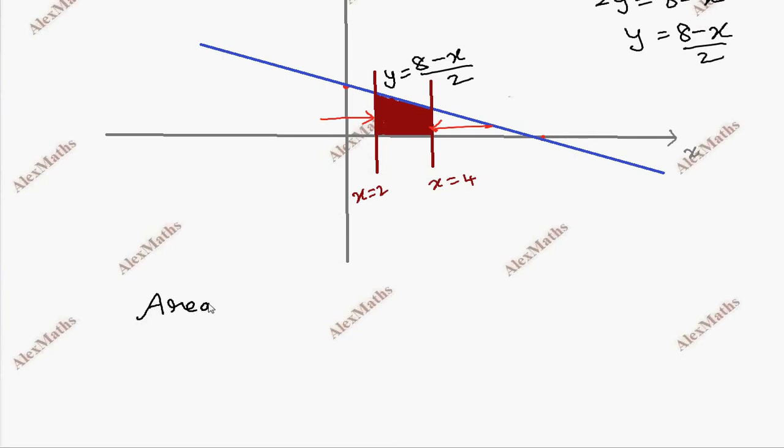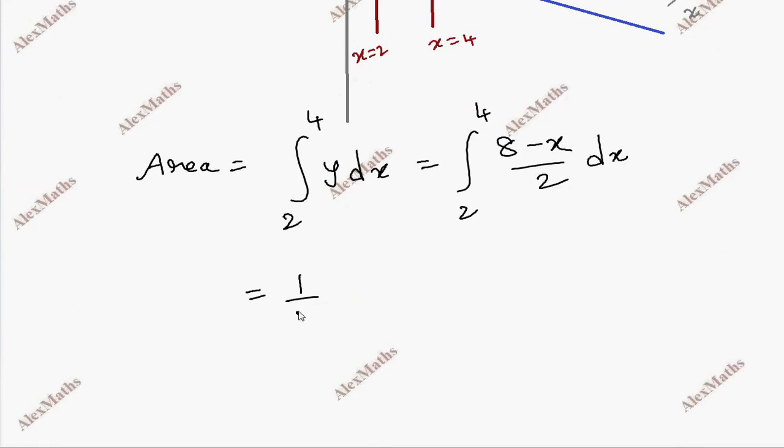Area equal to integral 2 to 4 of y dx. In the shaded region, y is 8 minus x by 2 into dx. This is 1 by 2 common, integral 2 to 4.